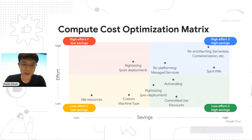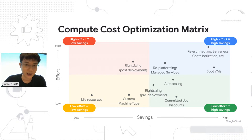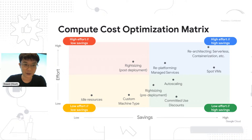This is a very important compute cost optimization metrics framework that we'll revisit throughout this session. The x-axis represents how much savings you can achieve with a particular technique, and the y-axis represents the effort needed to achieve those savings. What we want to prioritize is what we call the 'false domain' — low effort but high potential savings.